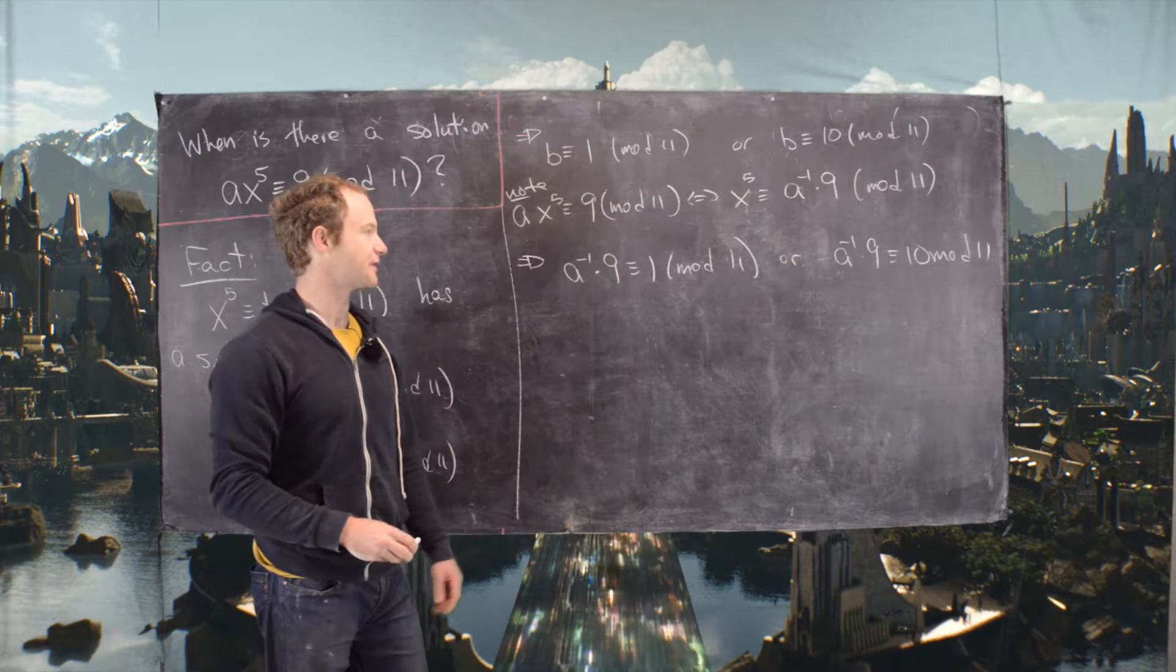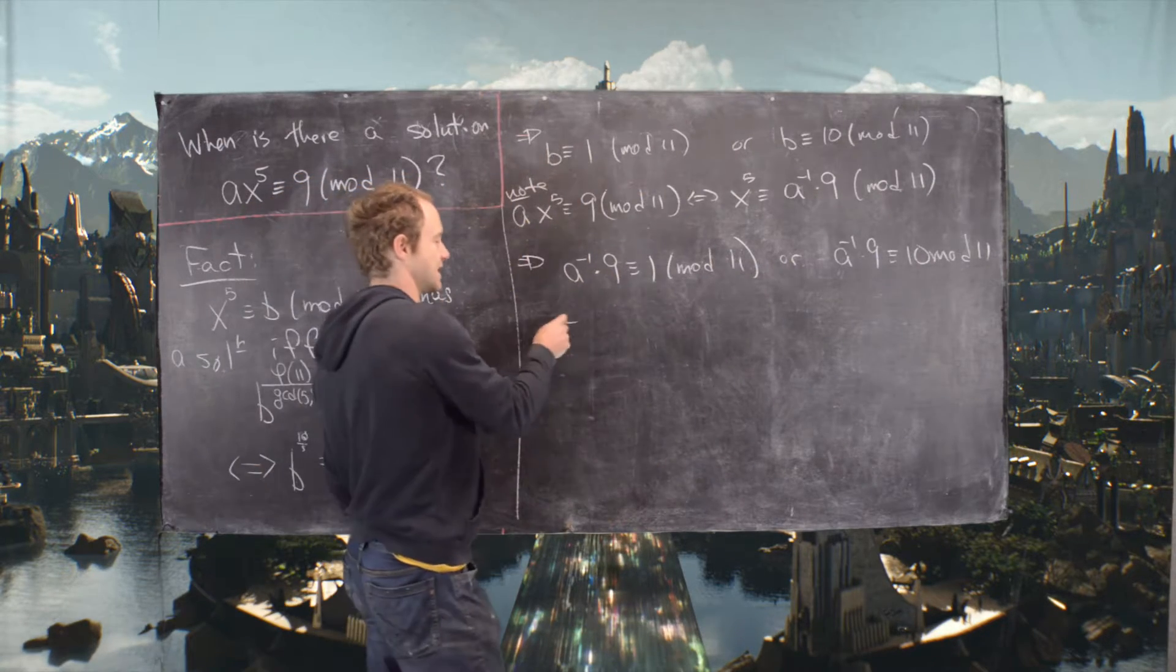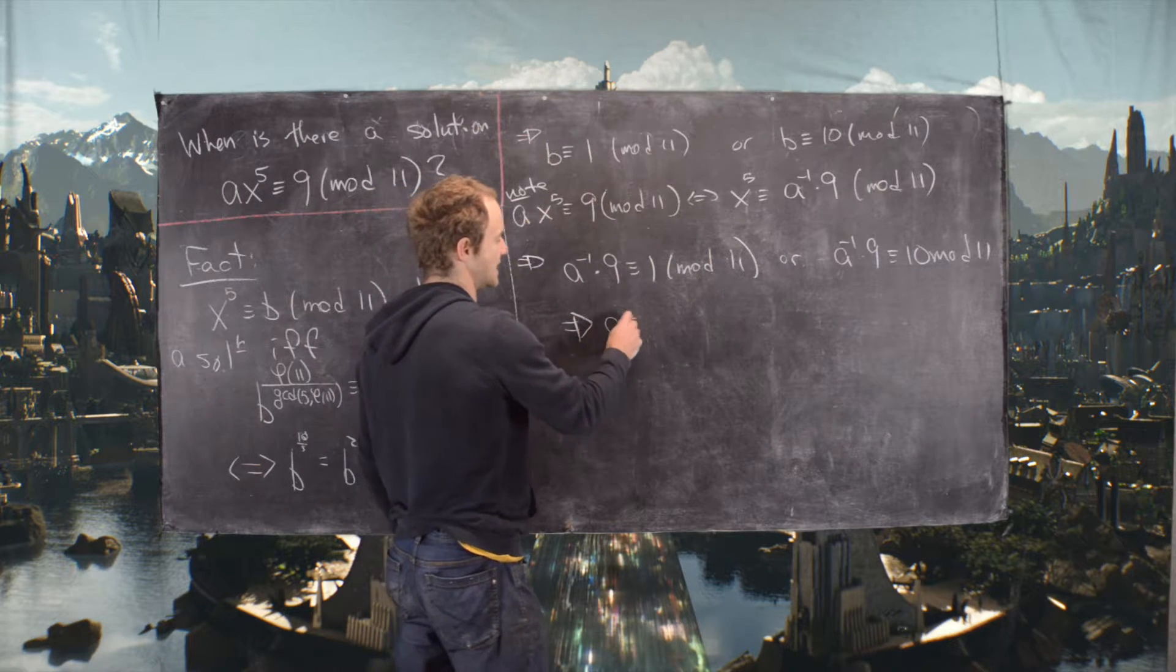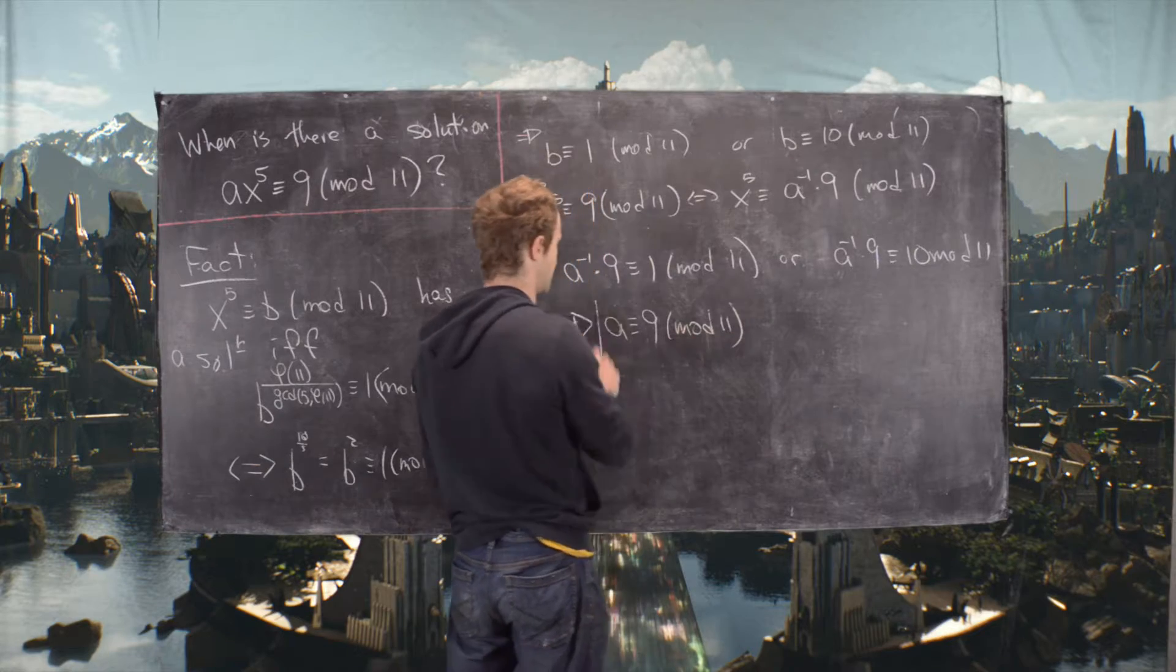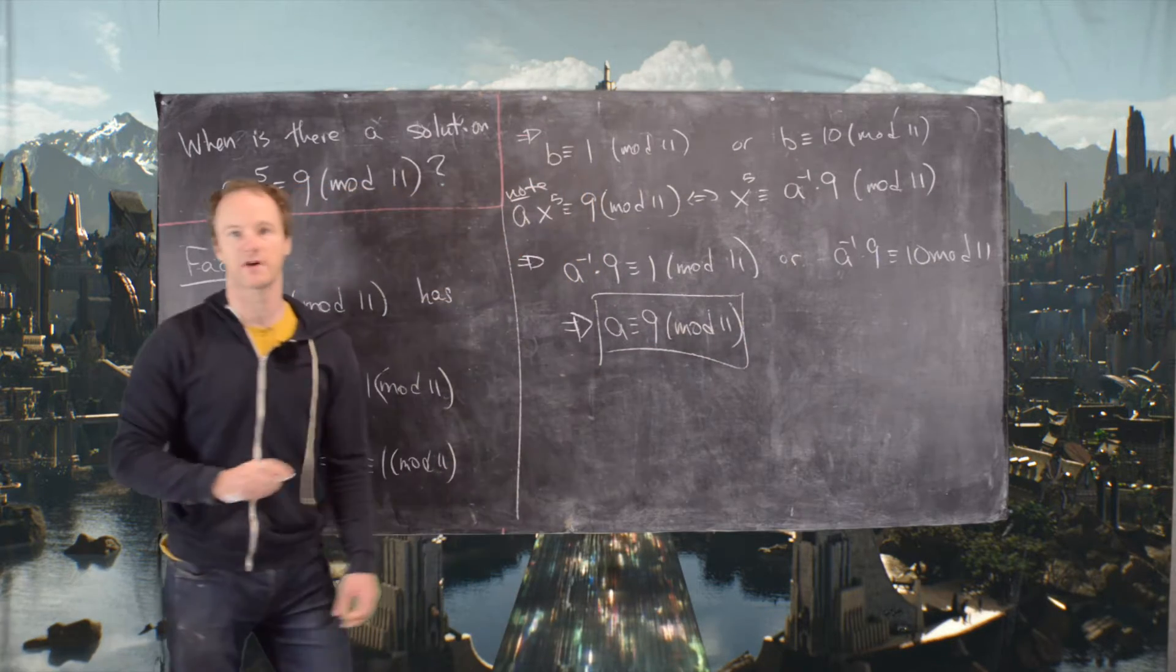So now we can solve each of those. In this case, it's pretty obvious that here we get A ≡ 9 (mod 11). So that's one of our solutions.